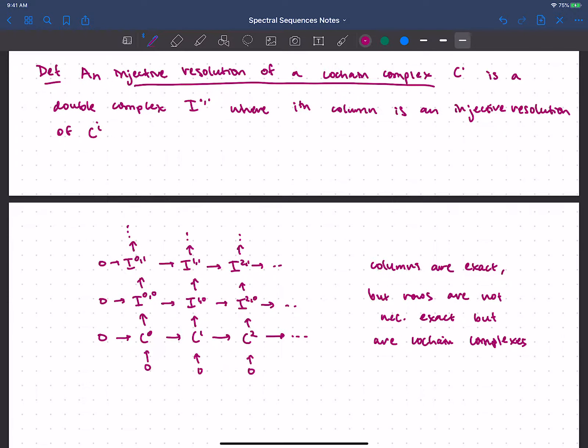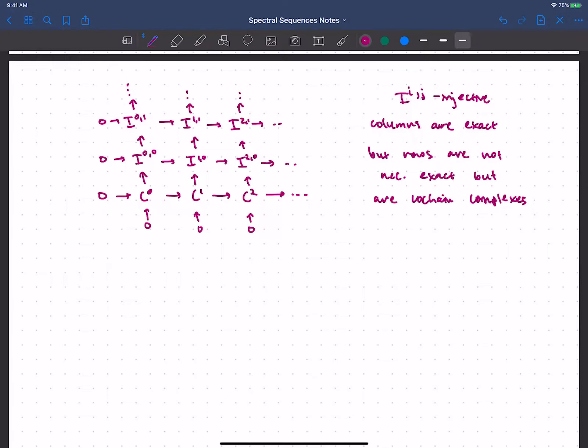So an injective resolution of a cochain complex is this big double complex of injectives. I guess I should have said that each of these I's is also injective. So it's not enough to be exact, right? This should be an injective resolution.